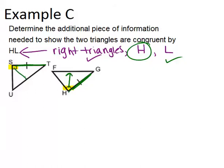So the last thing we need is to show that the two hypotenuses are congruent. Look across from the right angles to find your hypotenuses, and we need to be able to show that UT is congruent to FG.